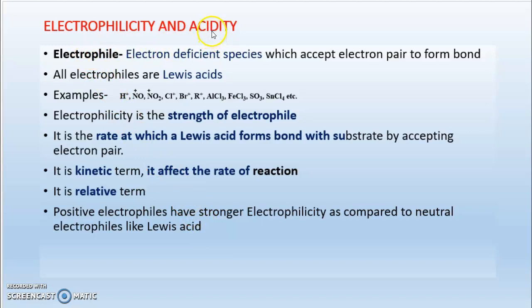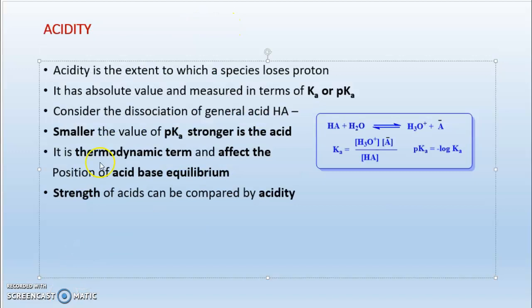Now we will move towards the concept of acidity. What is acid? Acid is a species which loses a proton, or acid is a species which accepts electrons. What is acidity? Acidity is the extent to which a species loses a proton. How fast a species loses a proton or accepts an electron is measured by the term acidity.